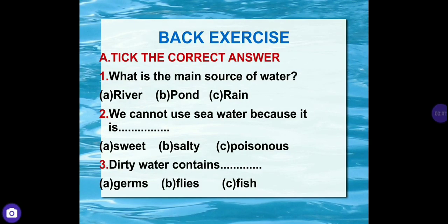Now it's time to do back exercise. First exercise is: take the correct answer. What is the main source of water – river, pond, or rain? We cannot use sea water because it is sweet, salty, or poisonous. Dirty water contains germs, flies, or fish. The main source of water is rain. We cannot use sea water because it is salty. Dirty water contains germs.